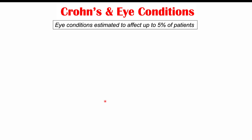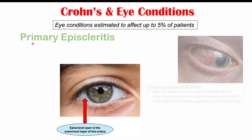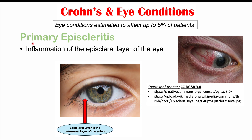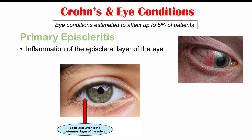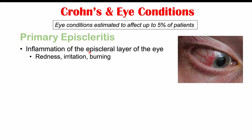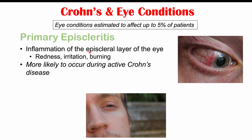Eye conditions are estimated to affect up to 5% of Crohn's disease patients. One condition that can occur is called primary episcleritis. Primary episcleritis is inflammation of the episcleral layer of the eye, and this inflammation leads to redness, irritation, and burning of the eye.